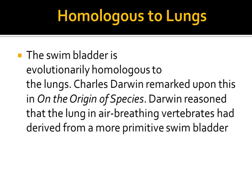The swim bladder arises from the dorsal wall of the gut and receives its blood supply usually from the dorsal aorta, while vertebrate lungs originate from the ventral wall of the pharynx and receive blood from the sixth aortic arch.